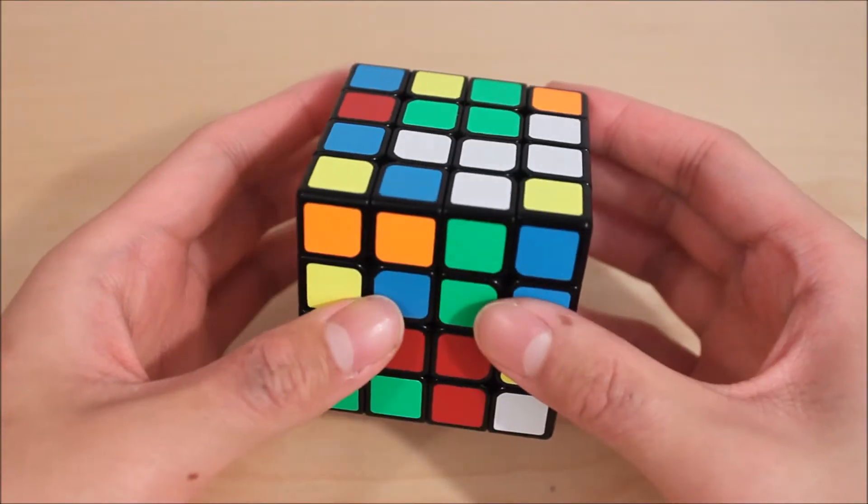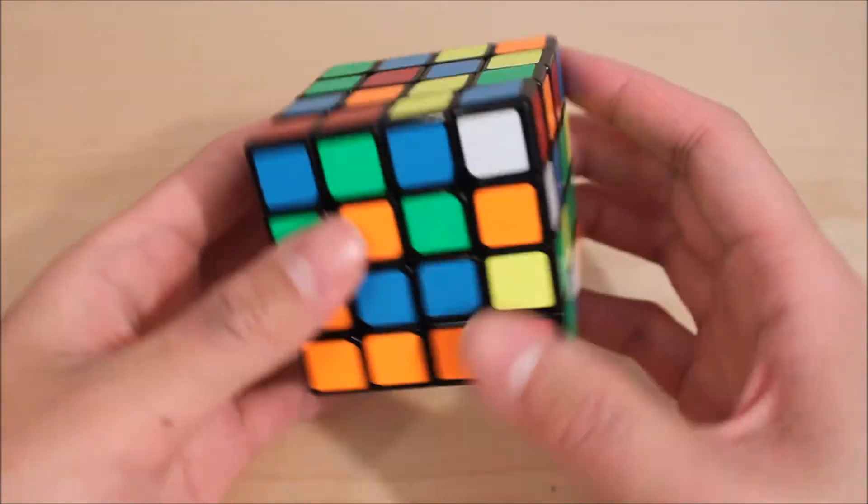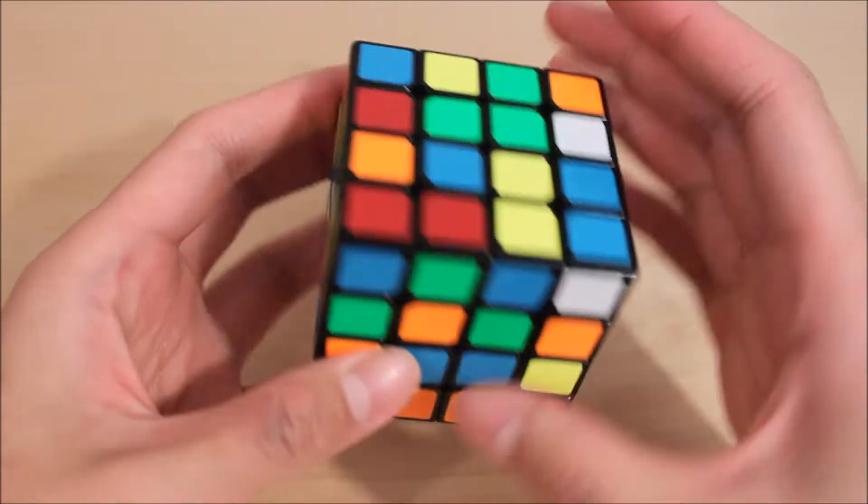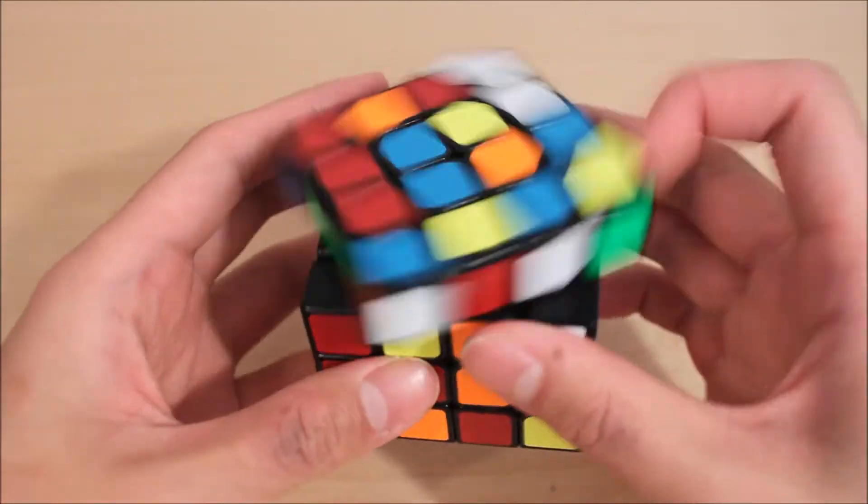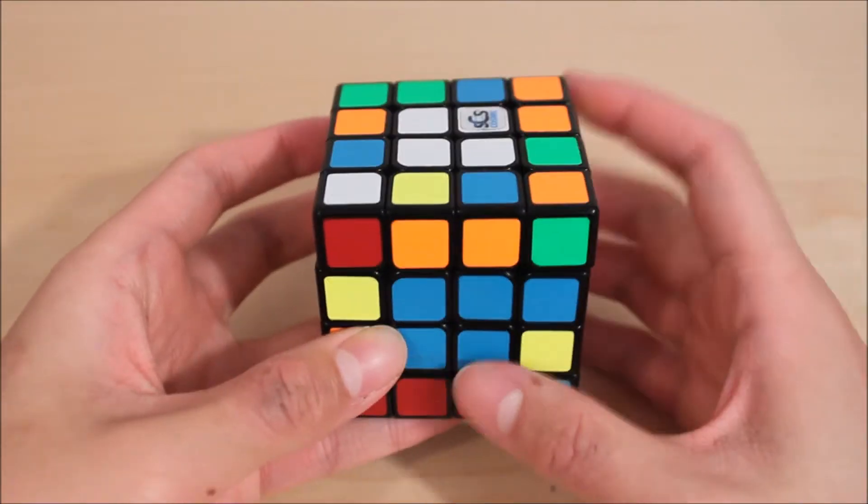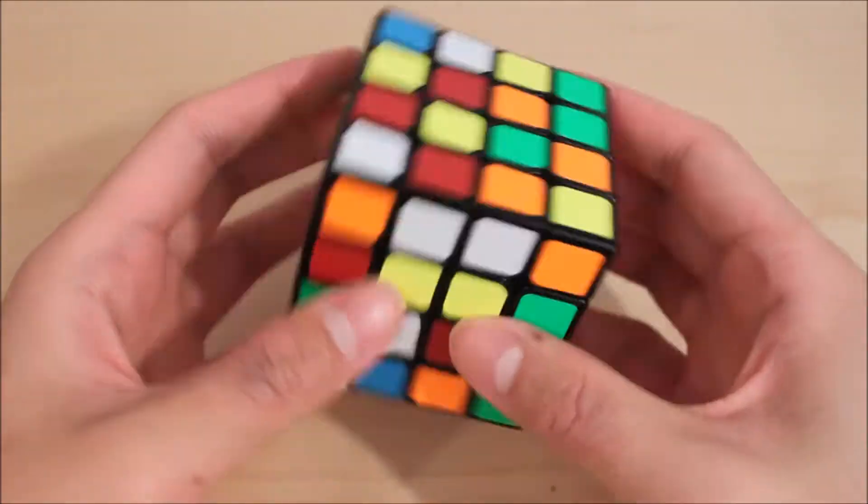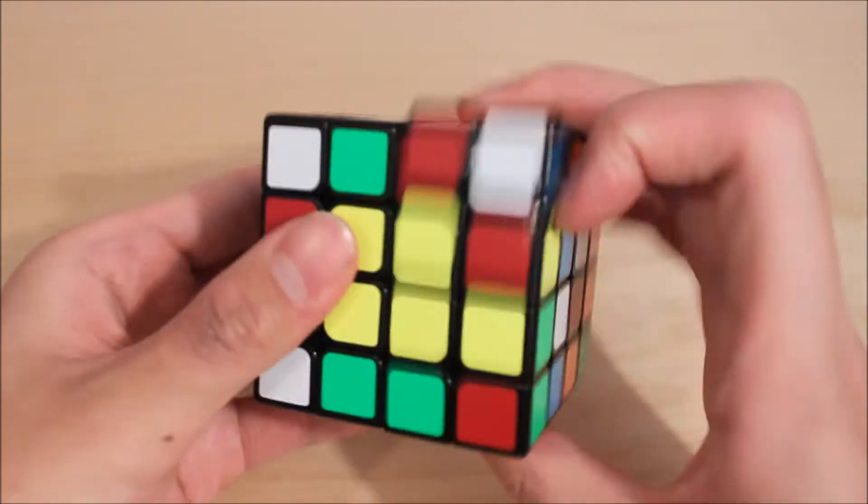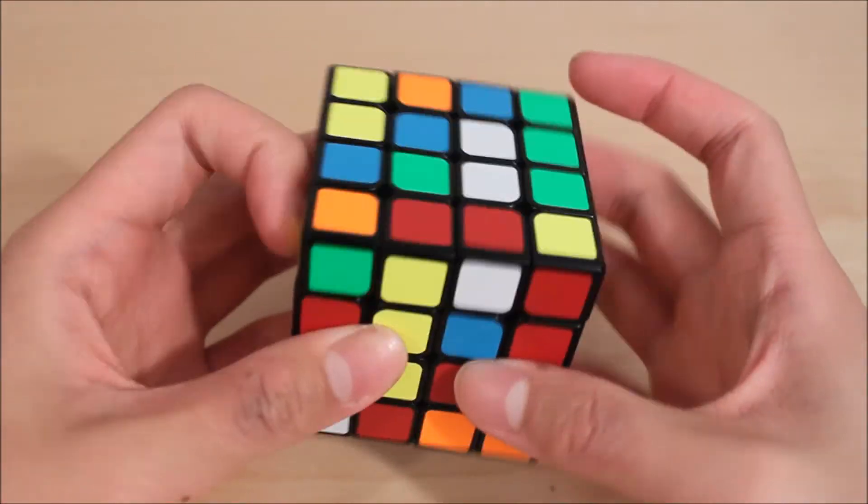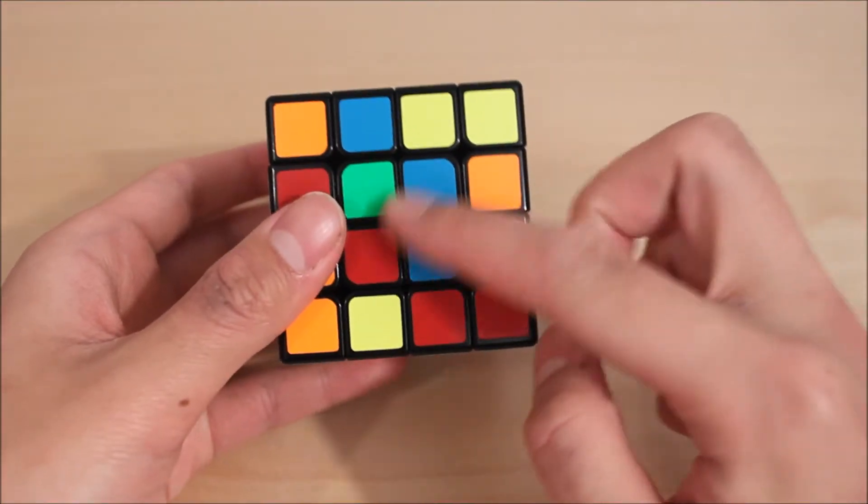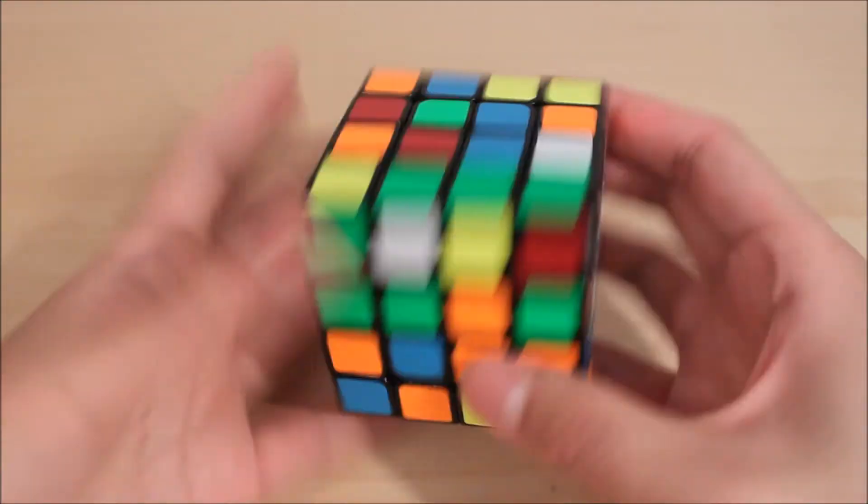For classic reduction and Hoya users, there are two options. One is just to solve two adjacent centers and continue to solve. However, if you still want to solve two opposite centers first, remember that you need to get the puzzle into an even state with two adjacent centers. In other words, solve the first three centers into an even state.